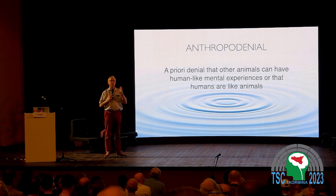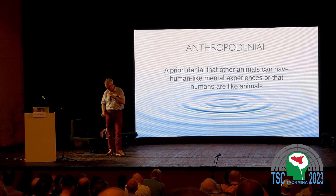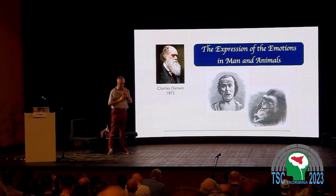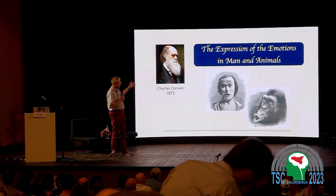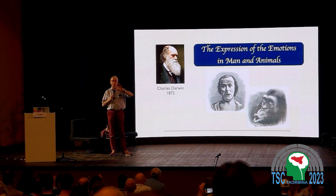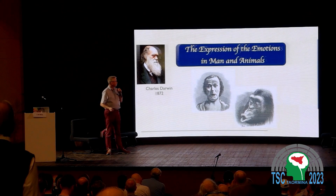In academia — except in fields like neuroscience, medicine, and biology — there is a lot of anthropodenial: people deny the connection with animals and deny that we are animals. Interestingly, before the 20th century, Darwin could freely speak about emotions in animals. His book on the subject disappeared from view for a whole century — it went out of print, declared unscientific. Then the hammer came down and we couldn't do it anymore.